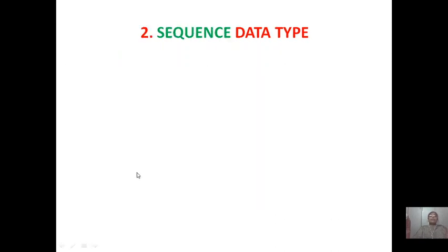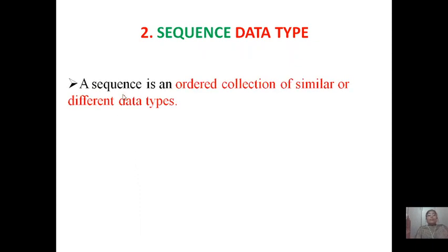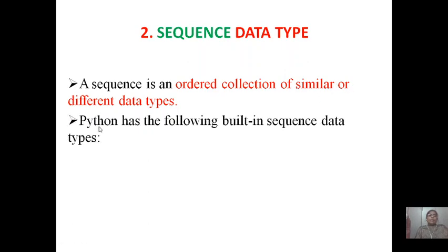Second data type is sequence data type. A sequence is nothing but an ordered collection of similar or different data types. Python has the following built-in sequence data types: string, list, and tuple. These three come under sequence data type.